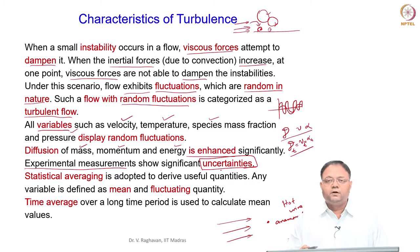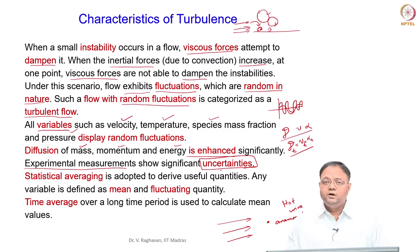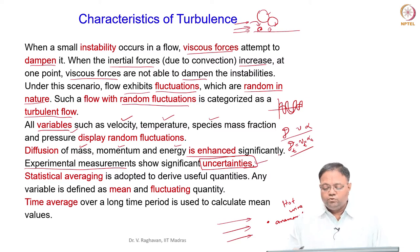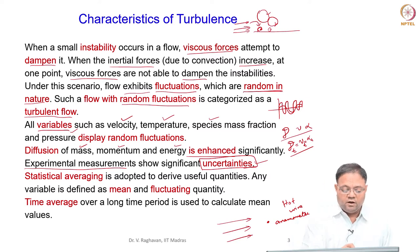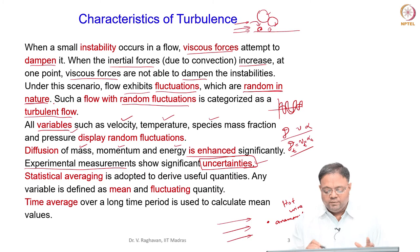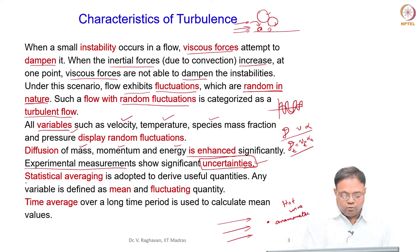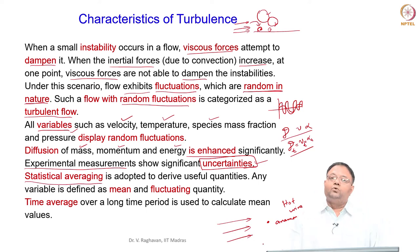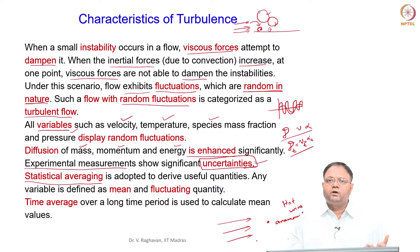Even with accurate repeated measurements, the uncertainties are very high due to the randomness of the fluctuation, which is an inherent property of turbulent flow. What we normally do is statistical averaging — we compute the mean and deviations and other statistical quantities.